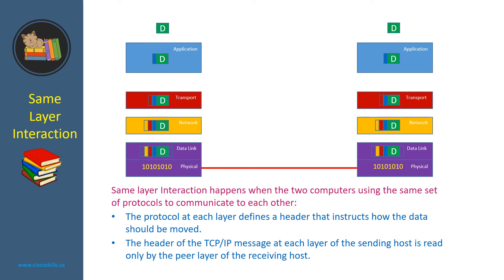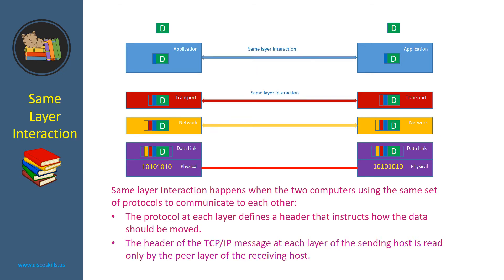The protocol at each layer defines a header that instructs how the data should be moved. The header of the TCP/IP message at each layer of the sending host is read only by the peer layer of the receiving host. For example, the header of the segment created by the TCP protocol at the transport layer of the sending host is read only by the TCP protocol at the receiving host. This is called same layer interaction.